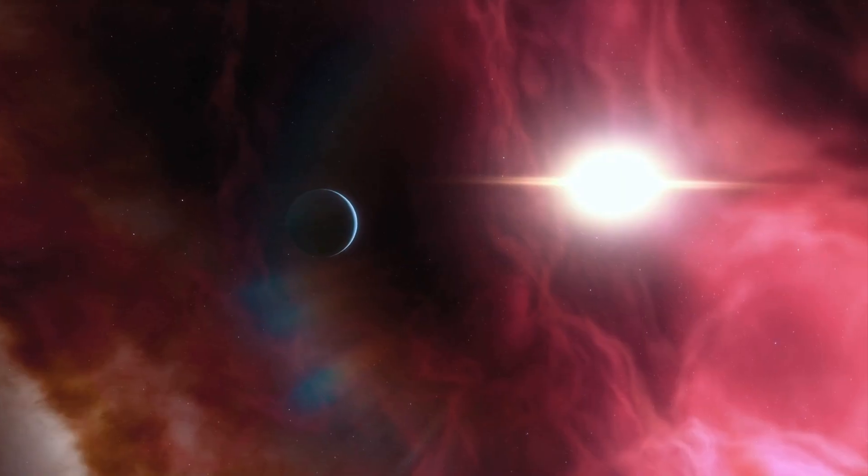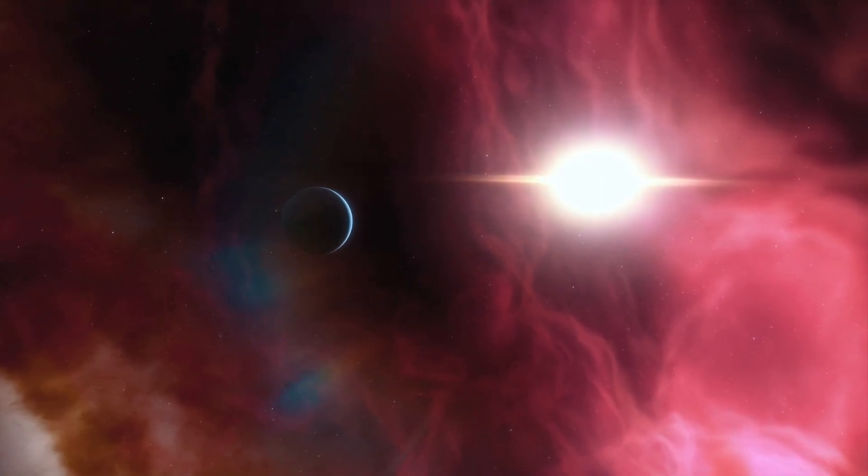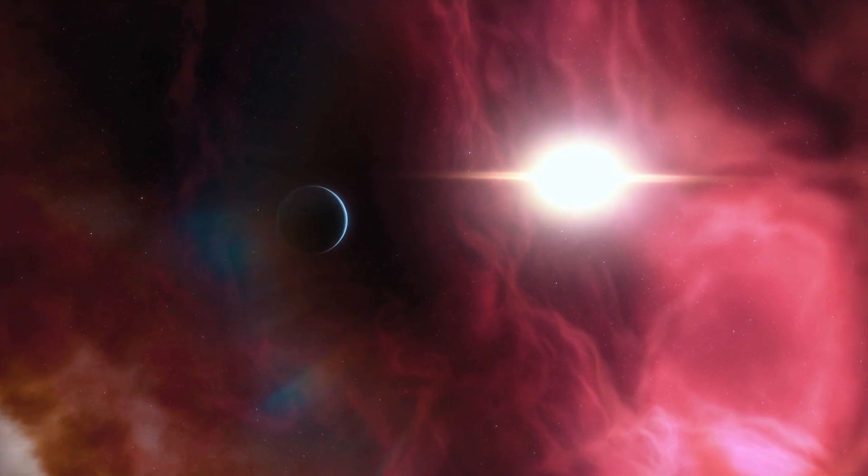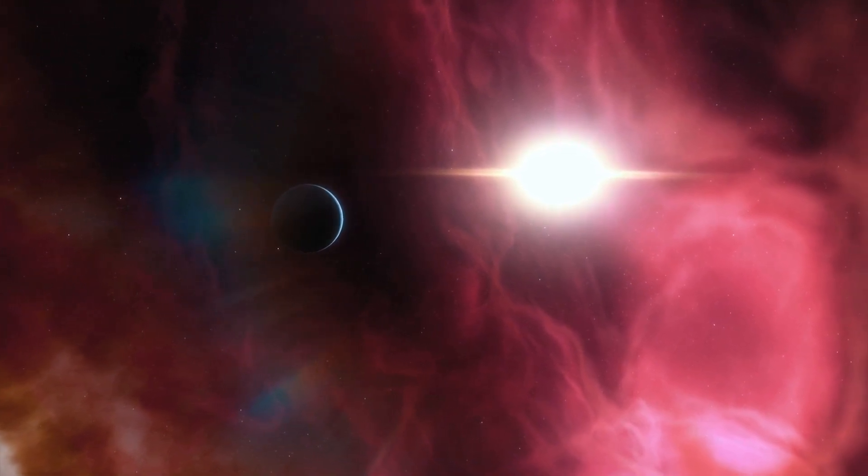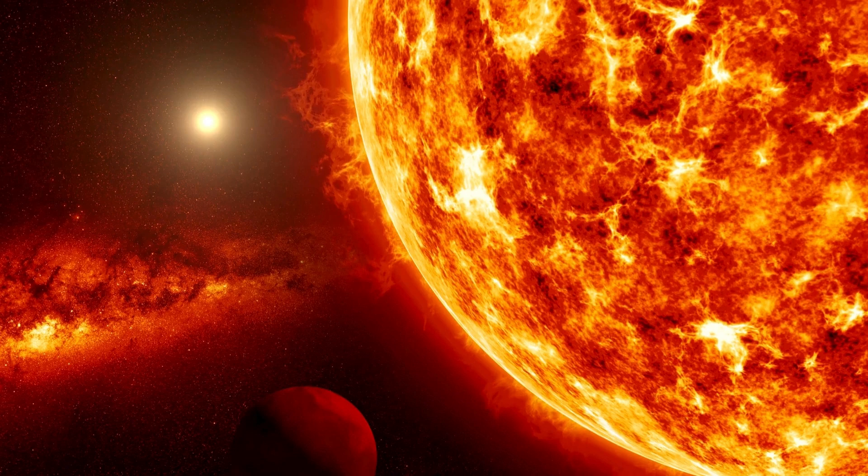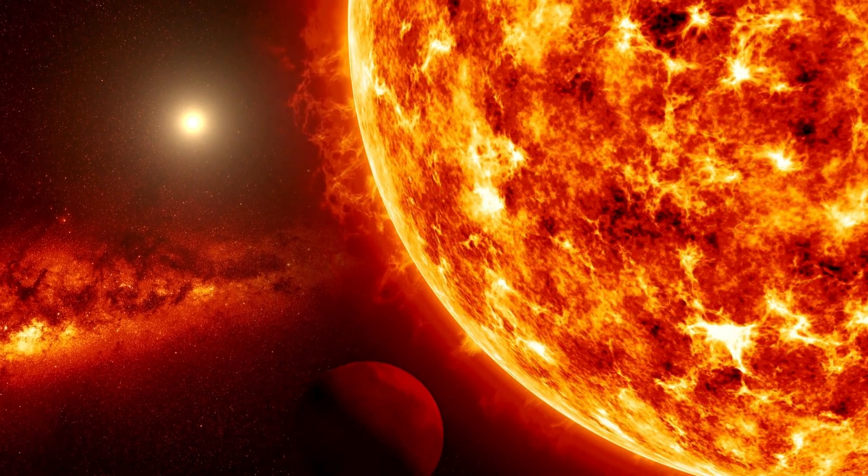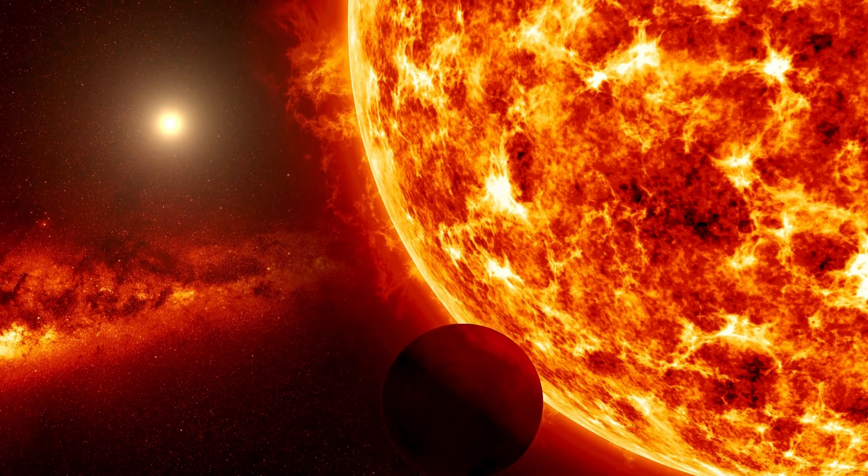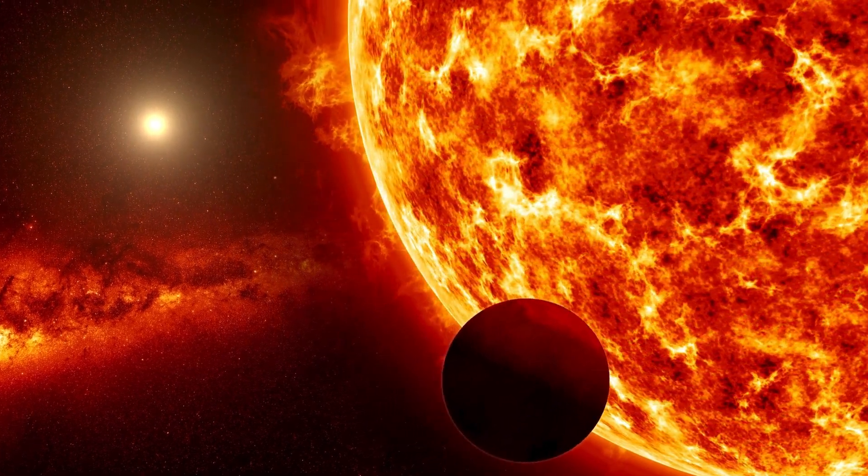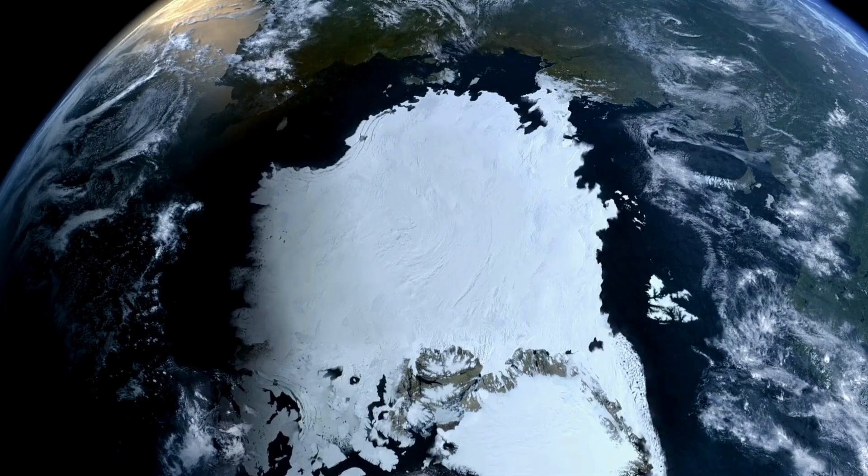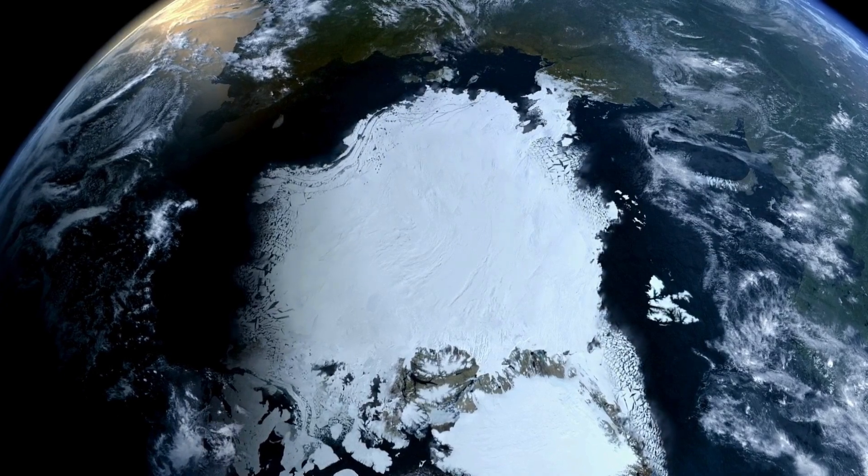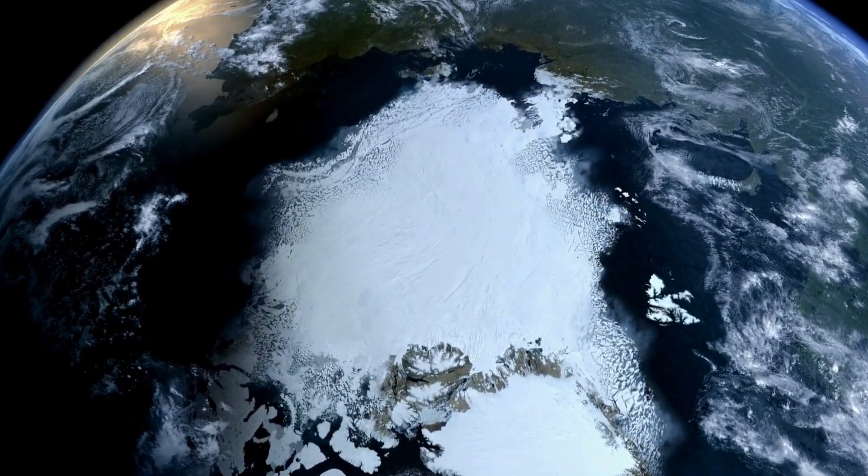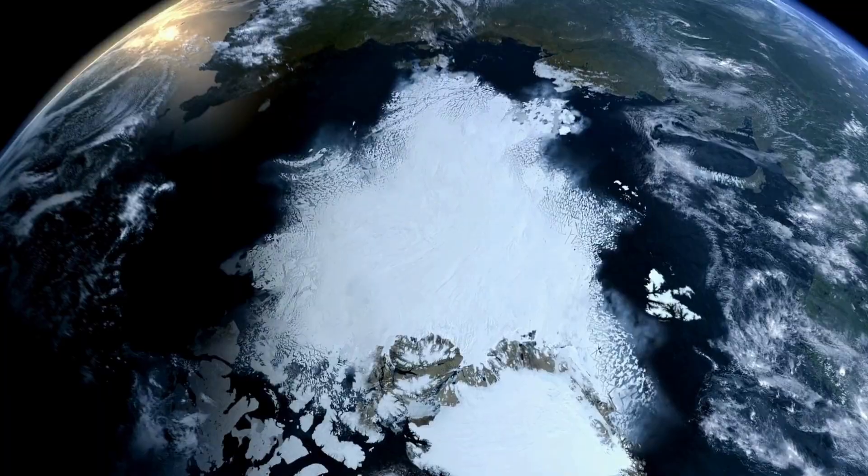As we venture beyond our own solar system, we discover a whole new world of exoplanets, planets that orbit stars other than the Sun. And with 206 billion stars in the universe, the possibilities of exoplanets are endless. Some exoplanets even roam free, untethered to any star, like rogue travelers in space. But among them all, Proxima Centauri b stands out as a truly remarkable and enigmatic planet.